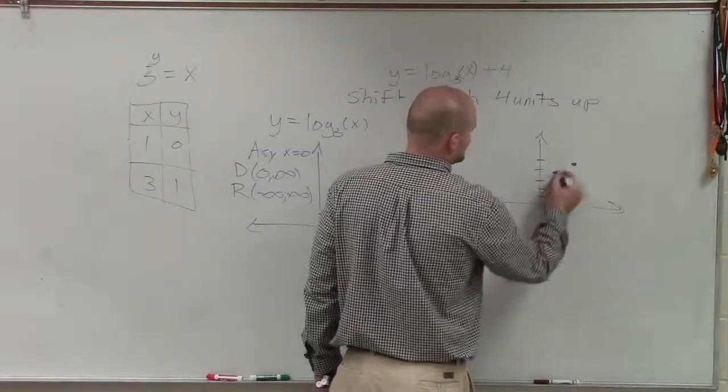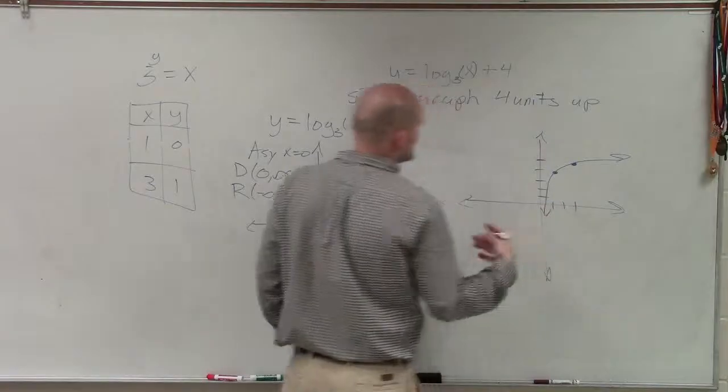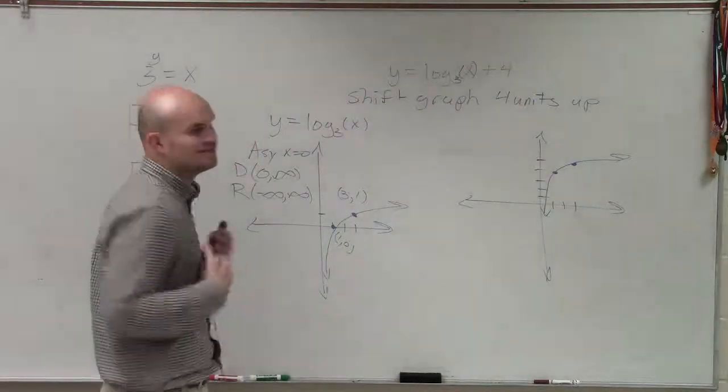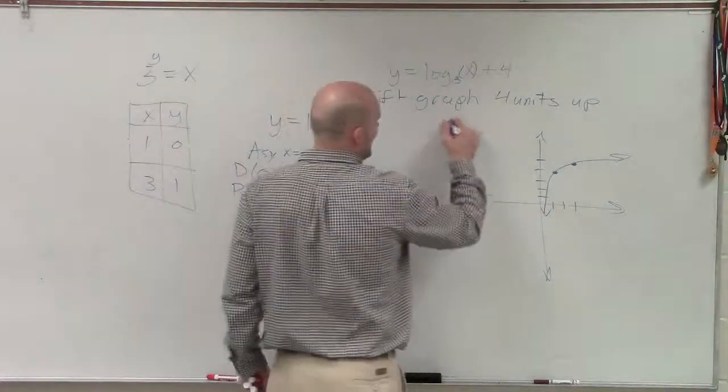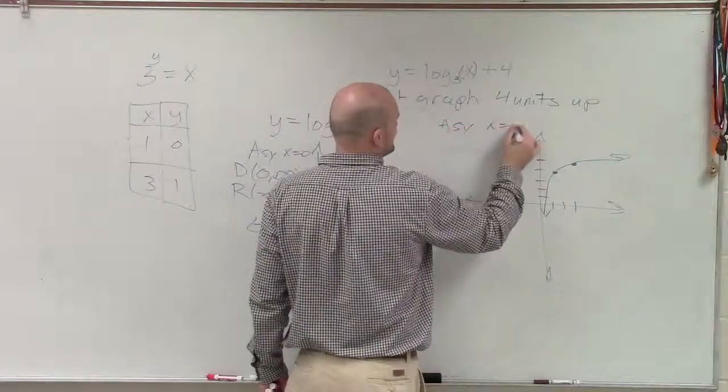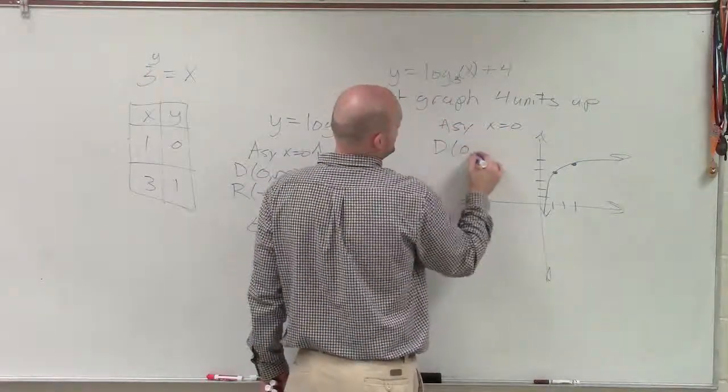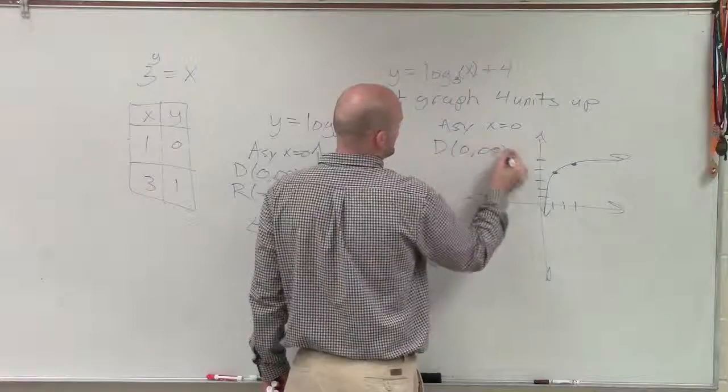That's not changing. Since I haven't shifted the graph left or right at all, my asymptote is still going to be at x equals 0. My domain is still going to be from 0 to infinity.